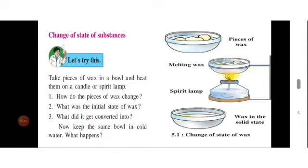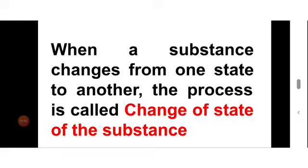Now keep the same bowl in cold water and observe what happens. The liquid state of wax will convert again into the solid state of wax. From this, we can find out that when a substance changes from one state to another, the process is called the change of state of a substance.